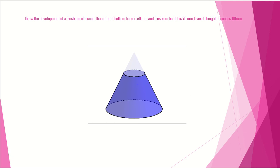Draw the development of a frustum of a cone. The diameter of the bottom base is 60 mm, the frustum height is 90 mm, and the overall height of the cone is 110 mm.